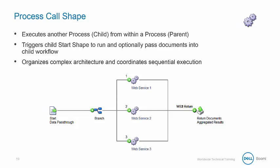You can organize complex architecture to coordinate sequential execution — meaning if you use a branch shape to determine that subprocess 1 will execute before subprocess 2, and subprocess 2 will execute before subprocess 3.